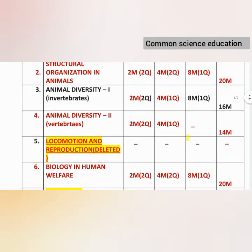Animal Diversity 2 — Vertebrates: 2 marks, 2 questions; 4 marks, 1 question; and 8 marks, 1 question.